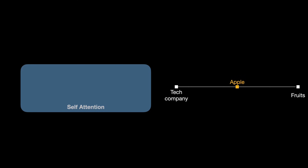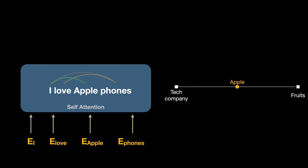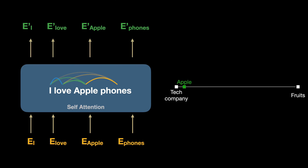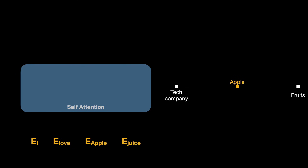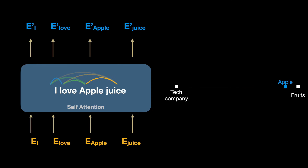We did solve this problem with the help of self-attention. Self-attention generates new word representations for all the words in a sentence based on their contextual meaning. For example, if previously apple had 50% tech properties and 50% fruit properties, self-attention will generate a new word representation of apple relevant to that sentence. When apple is used with phones, self-attention shifts the word embeddings more towards the technology company side. When used with juice, it moves apple more towards the fruit side.